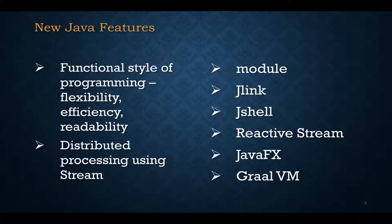Second is distributed processing using streams. If you know about the parallel stream API, that will definitely help in writing distributed systems. There are other features like modules, jlink, and jshell — these were introduced in Java 9 and you should definitely know about them.